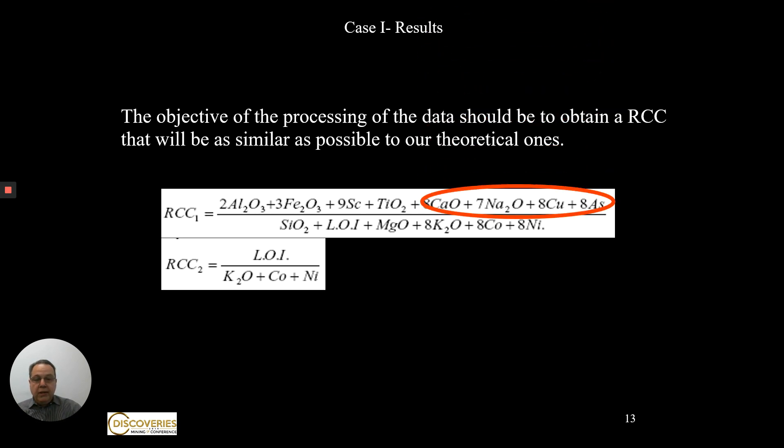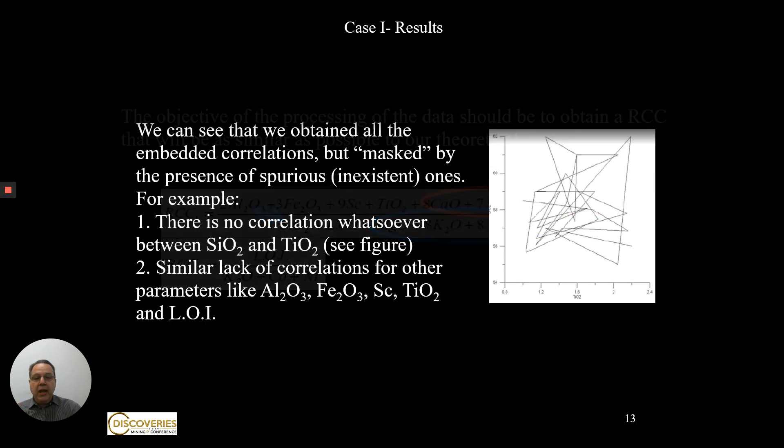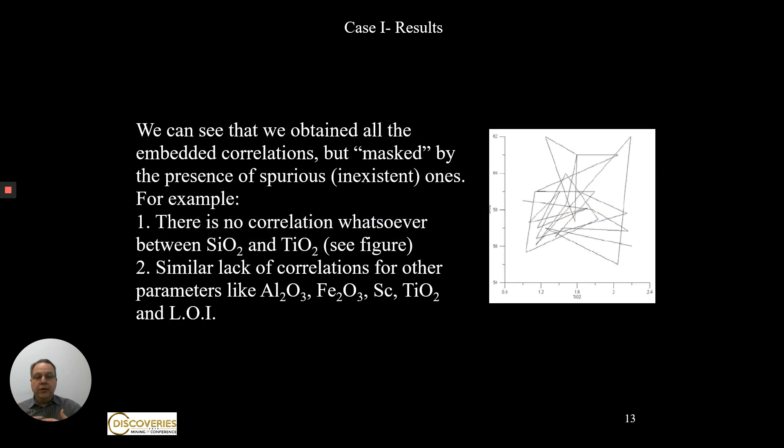But if you look at this in detail, you can see my original correlations are there, but there are also a lot of what are called spurious correlations that don't exist but mathematically we got them. One of the best examples is the silica-titanium, as you can see here in the graphic, it's not existing.